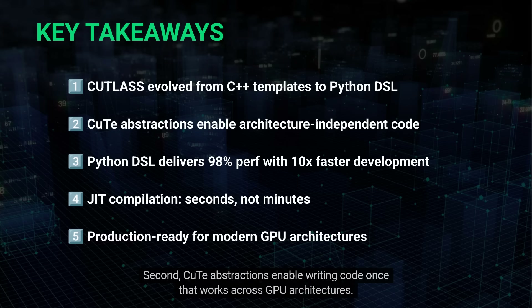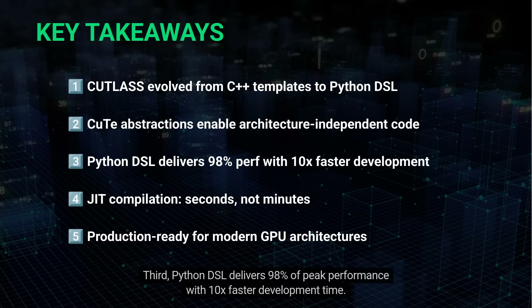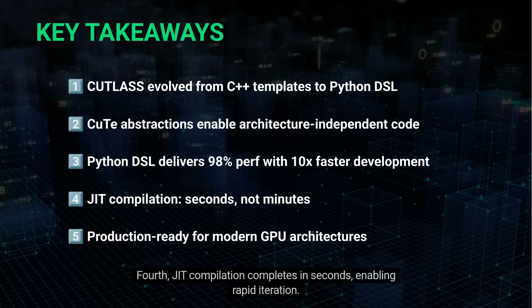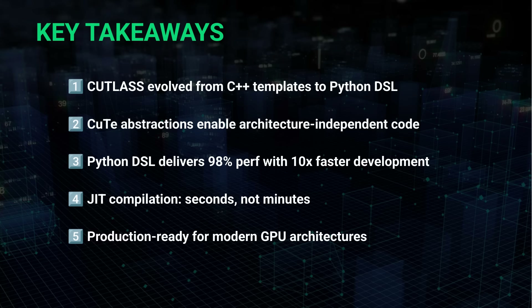Second, CuTe abstractions enable writing code once that works across GPU architectures. Third, Python DSL delivers 98% of peak performance with 10x faster development time. Fourth, JIT compilation completes in seconds, enabling rapid iteration. Fifth, this is production-ready today for modern GPU architectures.